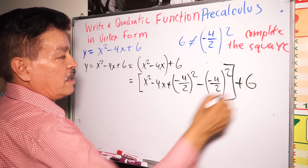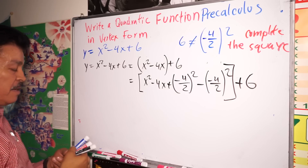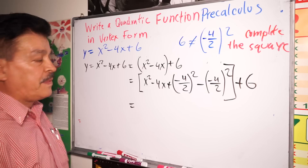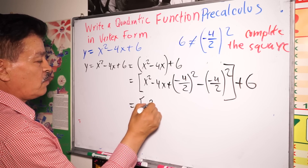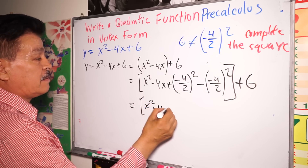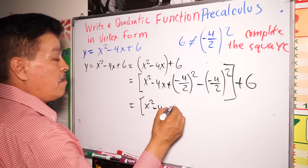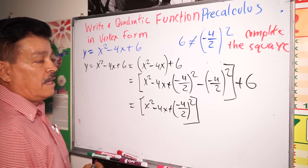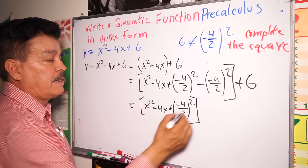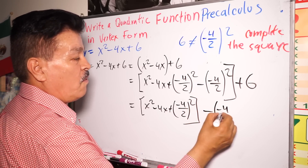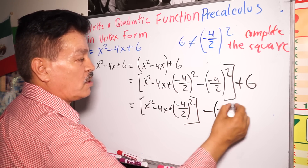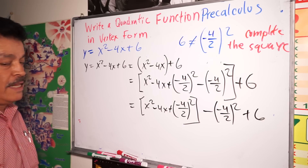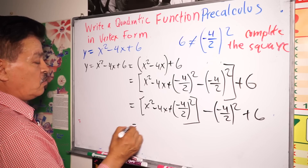But here we have to close the parentheses — I forgot to put that sign, it's very important — the signs. So next step: x to the second power minus 4x plus (minus 4 divided by 2) to the second power, and then minus (minus 4 divided by 2) to the second power plus 6. Now just factor.